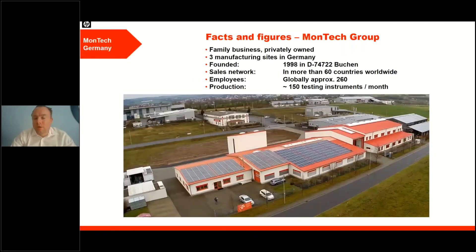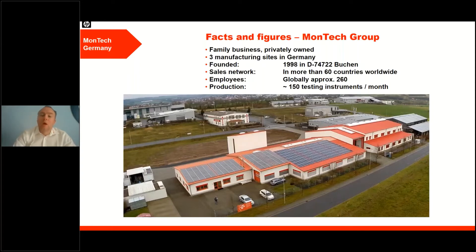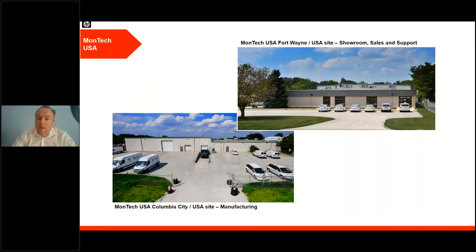A quick introduction about Montech: we're a privately owned company originating from Germany. We have currently three manufacturing sites, and our company has been growing since its inception in 1998, spanning over 60 countries across the world with about 260 directly employed people. We manufacture about 150 testing instruments per month dedicated to the rubber industry, with a global network of sales, service, and showrooms in Germany, the US, and other countries with major rubber company presence.